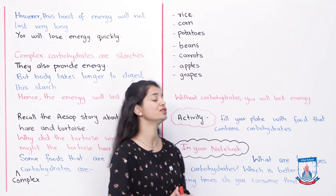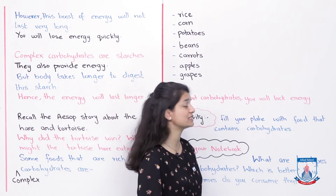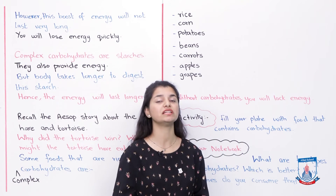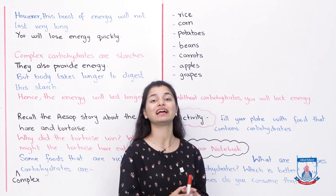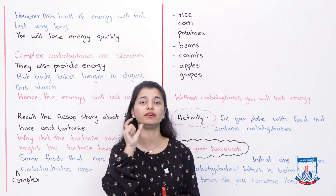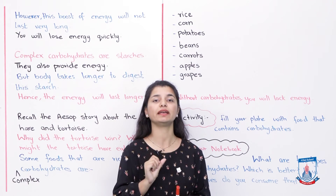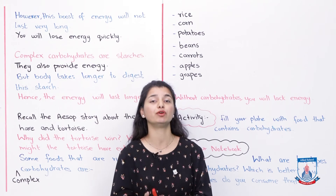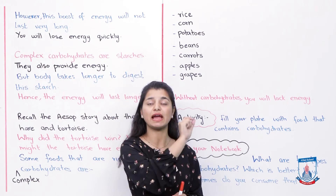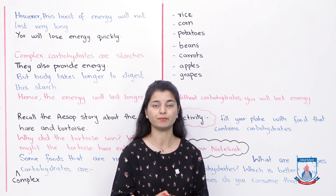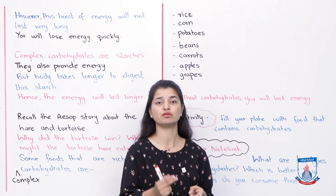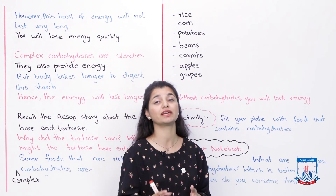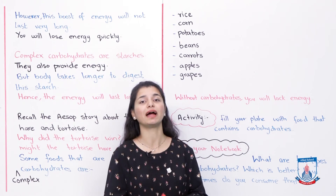Next, the activity: fill your plate with food that contains carbohydrates. We have done a similar activity in the proteins subunit. Basically, in this activity you are given different food items, and you have to select which ones are good sources of complex carbohydrates. Then you have to fill or draw them onto the plate. You can add rice, potatoes, carrots, apple, grapes — the examples we discussed — whichever you think are rich in complex carbohydrates.